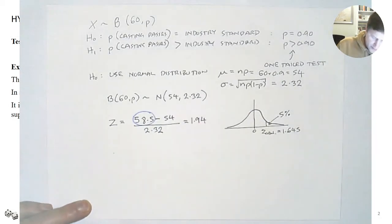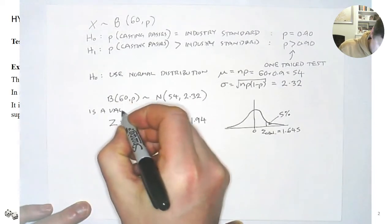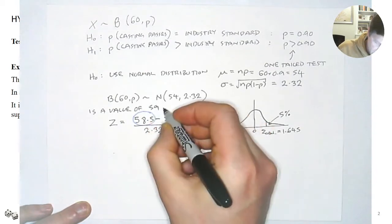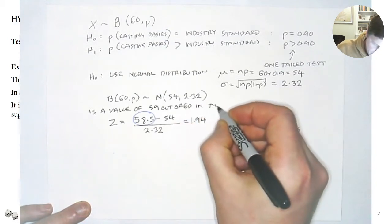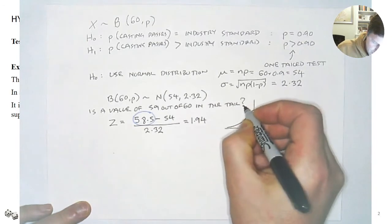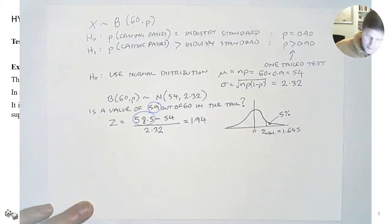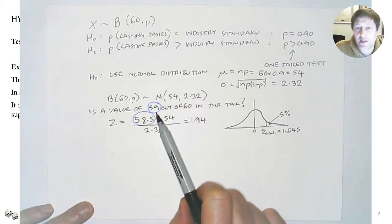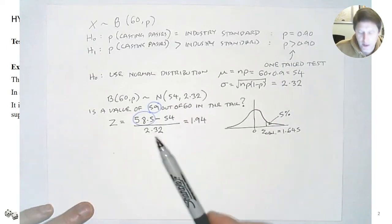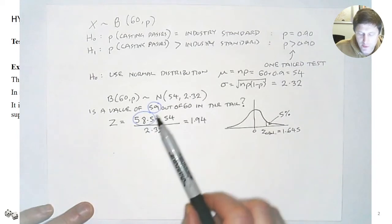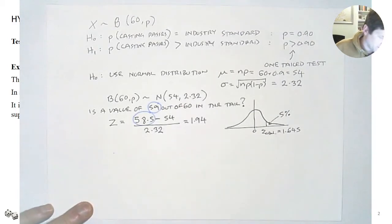Here we've used 58.5 rather than 59. This is because our original distribution was binomial — it's discrete — but we've turned it into a continuous approximation. Anything greater than 58.5 would be included within 59 in our approximation, so we need to use 58.5 to do this correctly. This is a continuity correction.